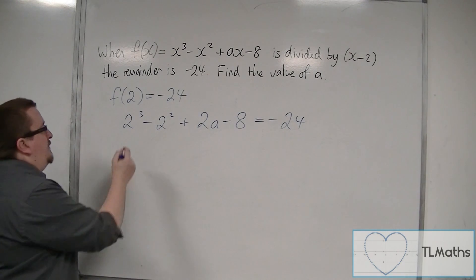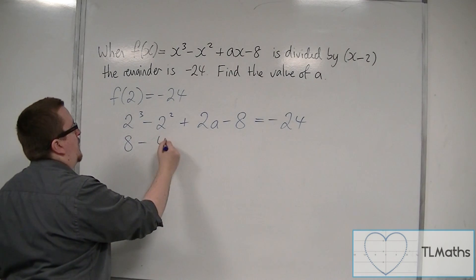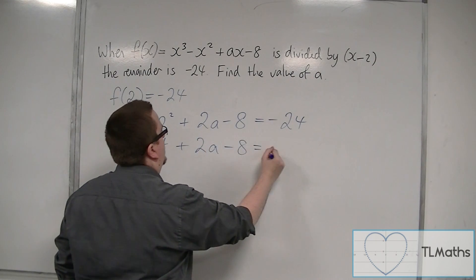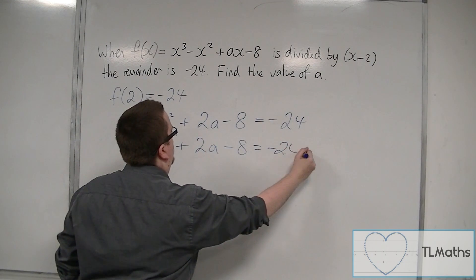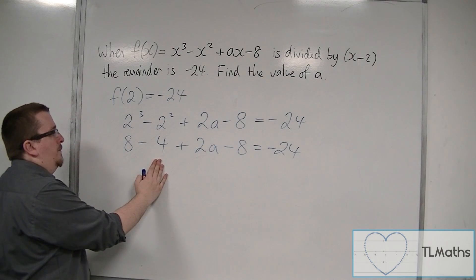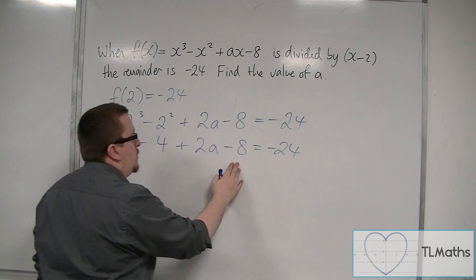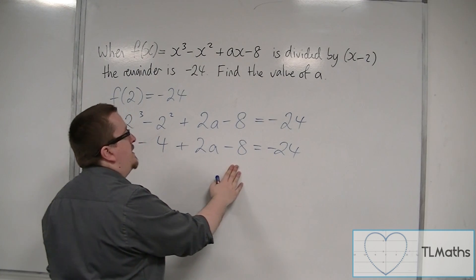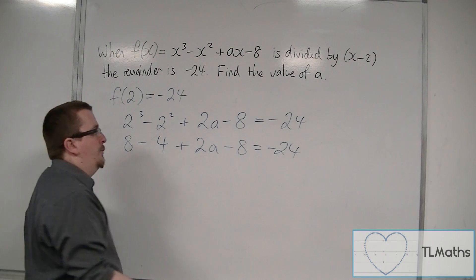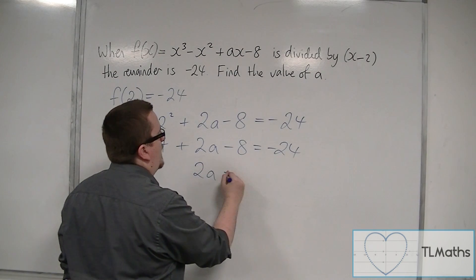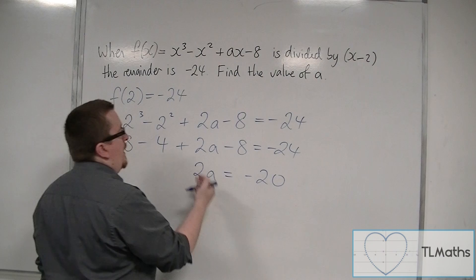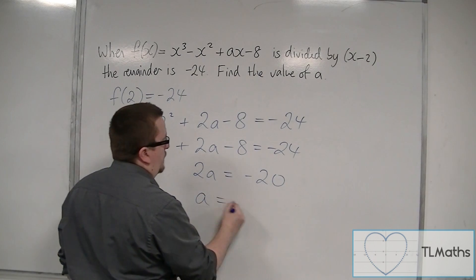So we have 2 cubed, that's 8, take away 4, plus 2a minus 8 is minus 24. 8 take away 4 is 4, take away another 8 is minus 4. Add the 4 to both sides, so we get 2a equals minus 20, and then divide both sides by 2.